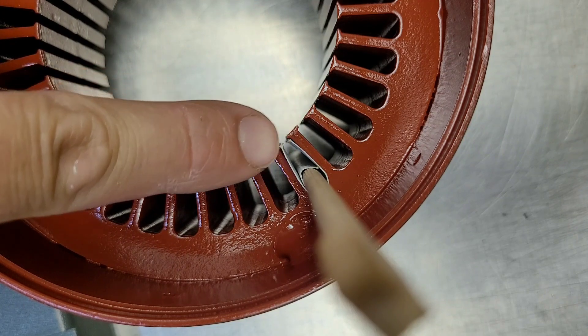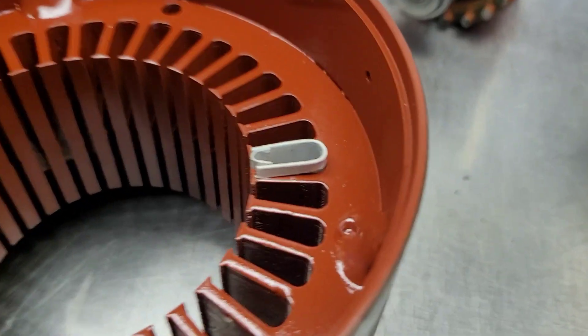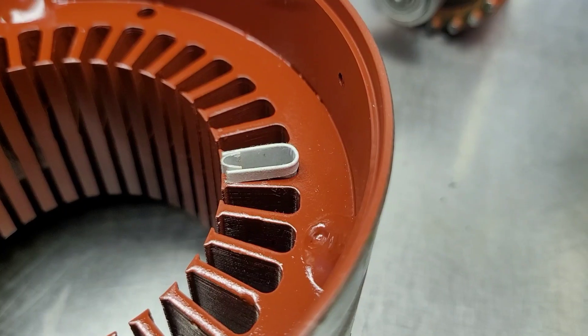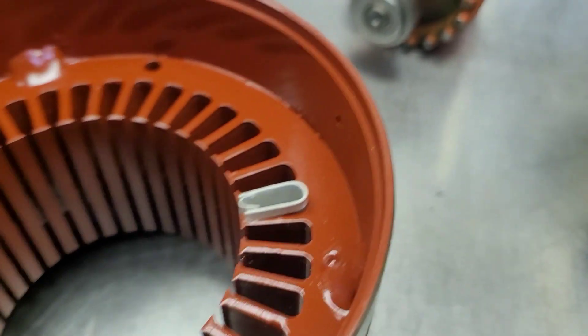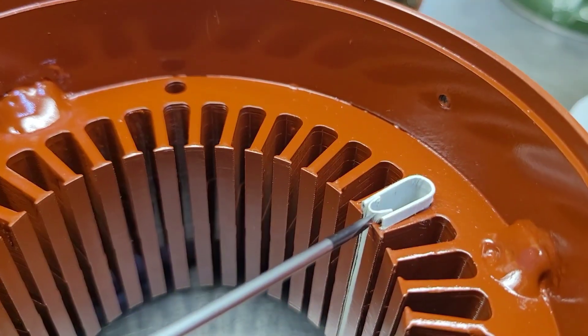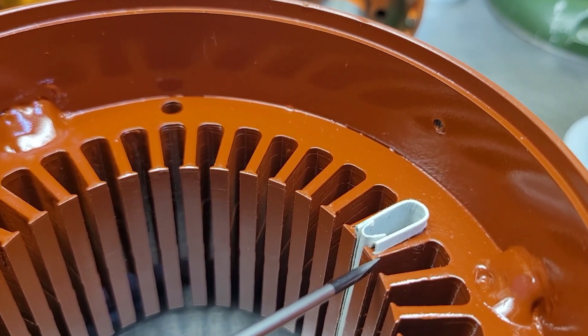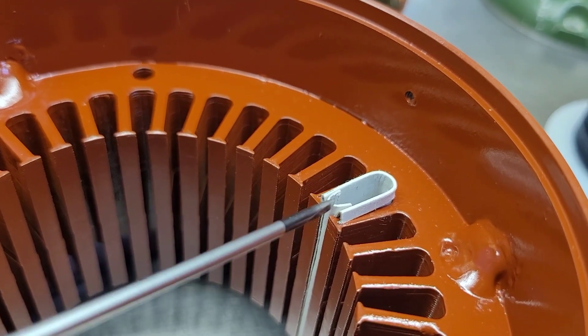Alright, so as you can see here I now have a lip rolled on the end of the slot liner. And what that does is you can see here it locks over the edge and that prevents this slot liner from slipping to one side or the other or falling out while you're trying to wind it.